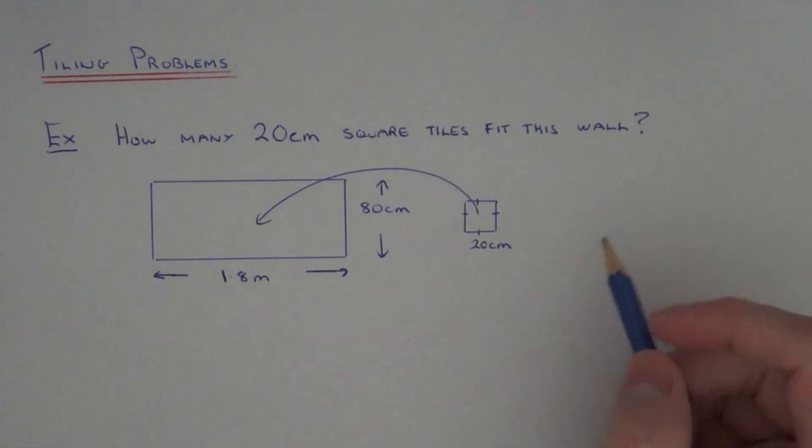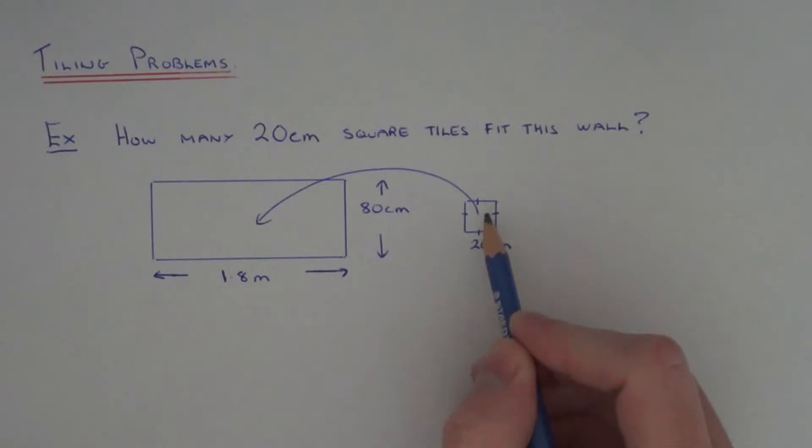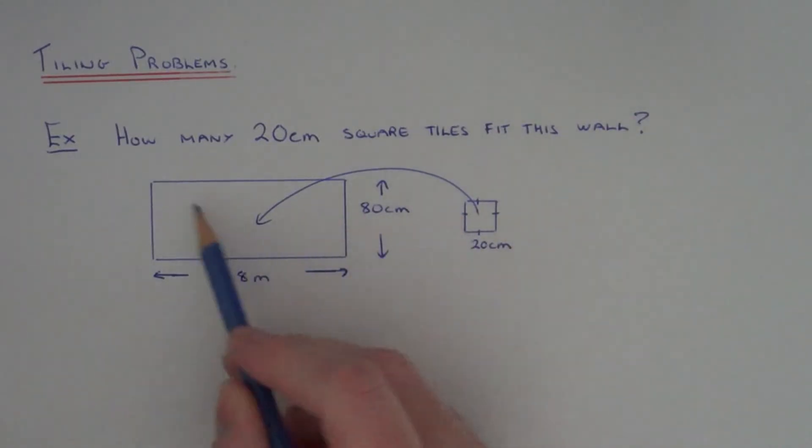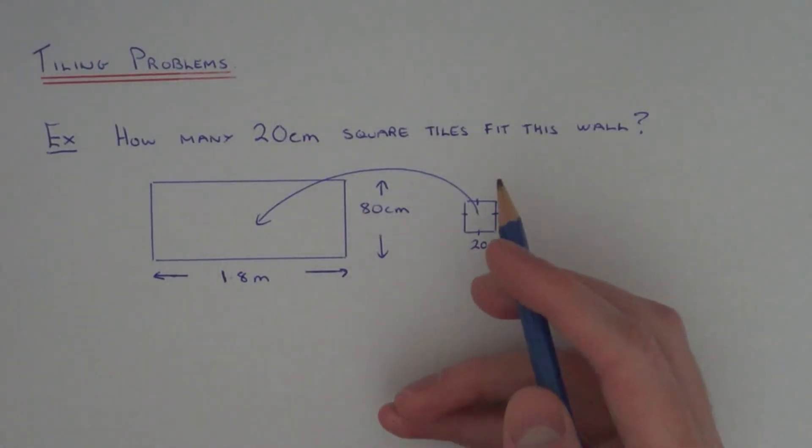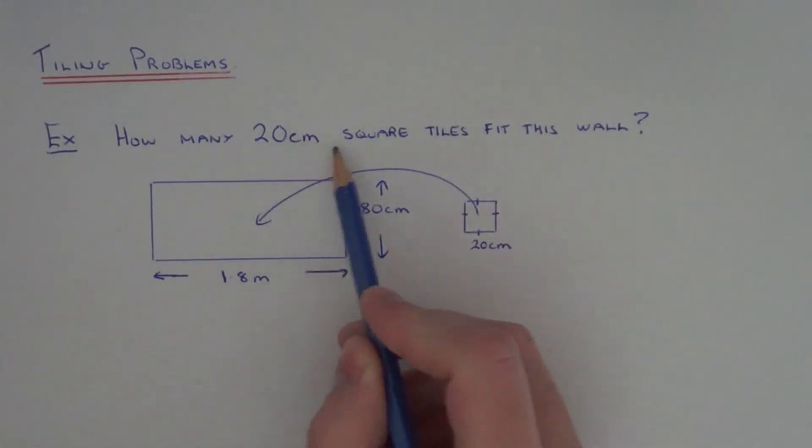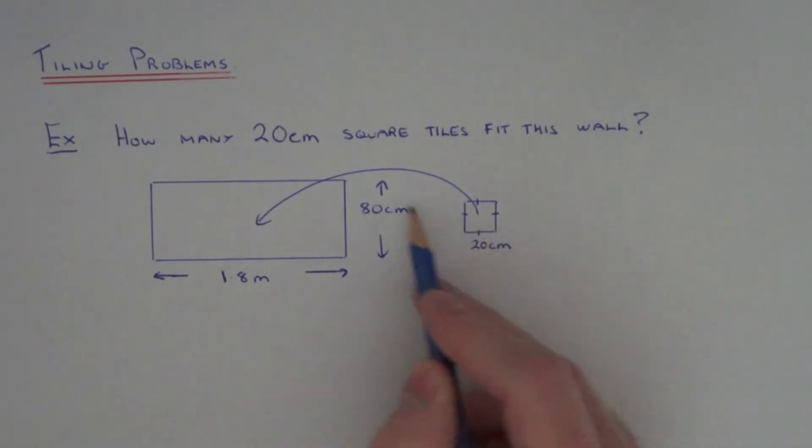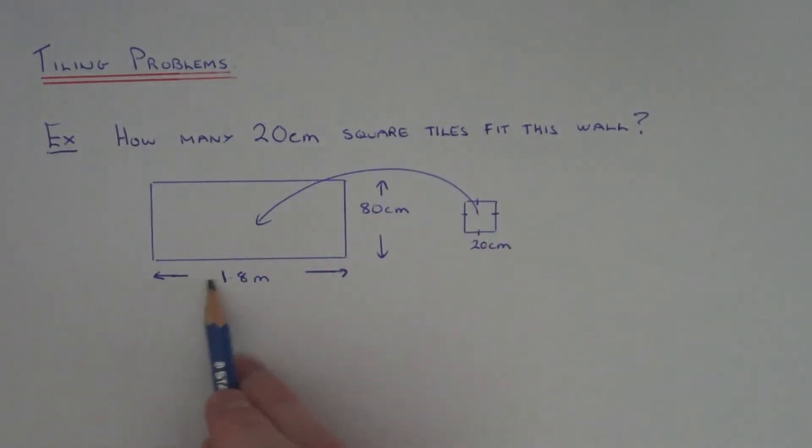Today I'm going to show you how to figure out how many small tiles fit inside a wall space. In our example here we need to find out how many 20cm square tiles go inside this wall which is 1.8m across and 80cm tall.